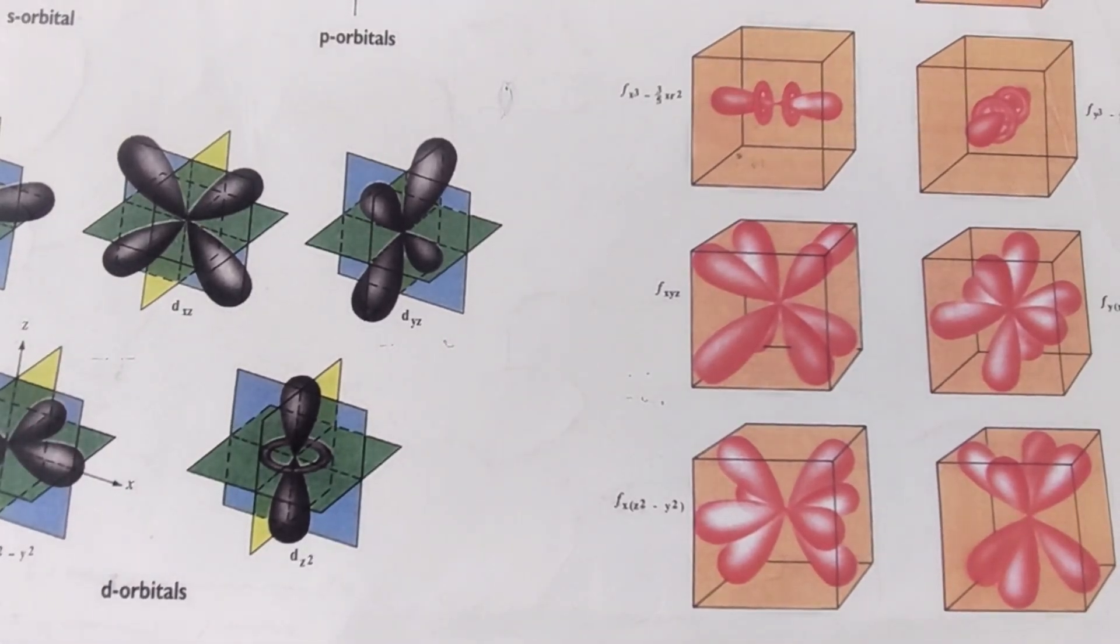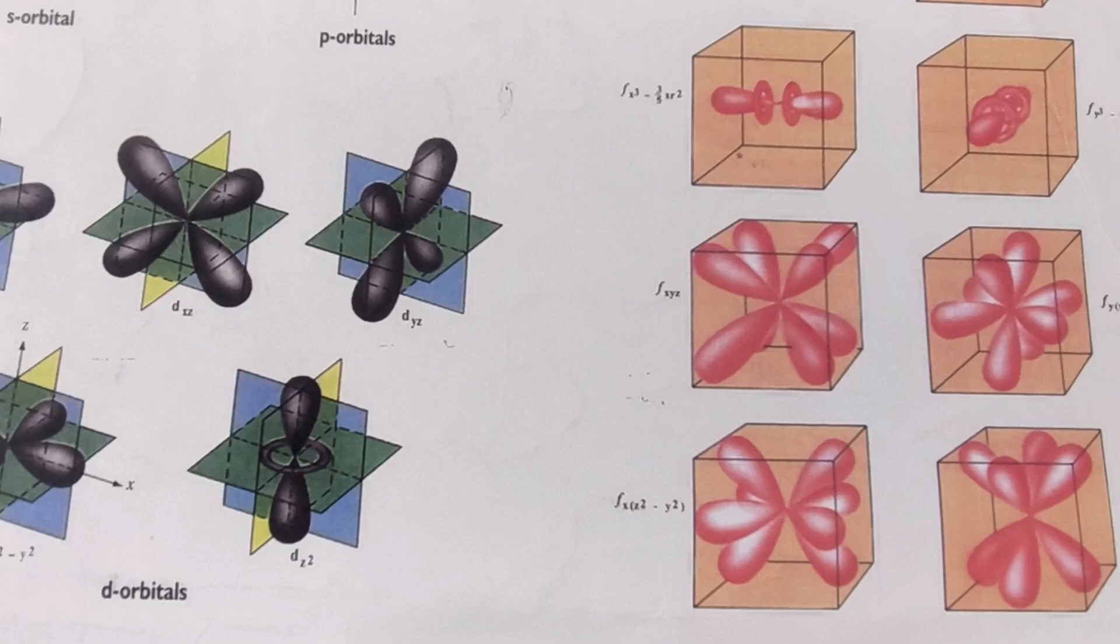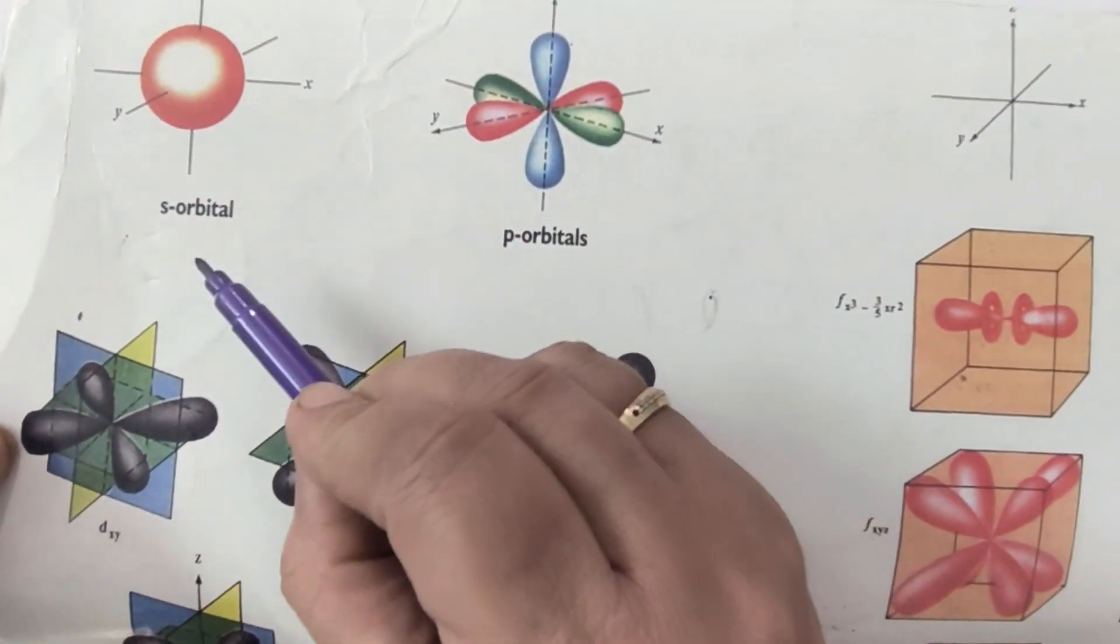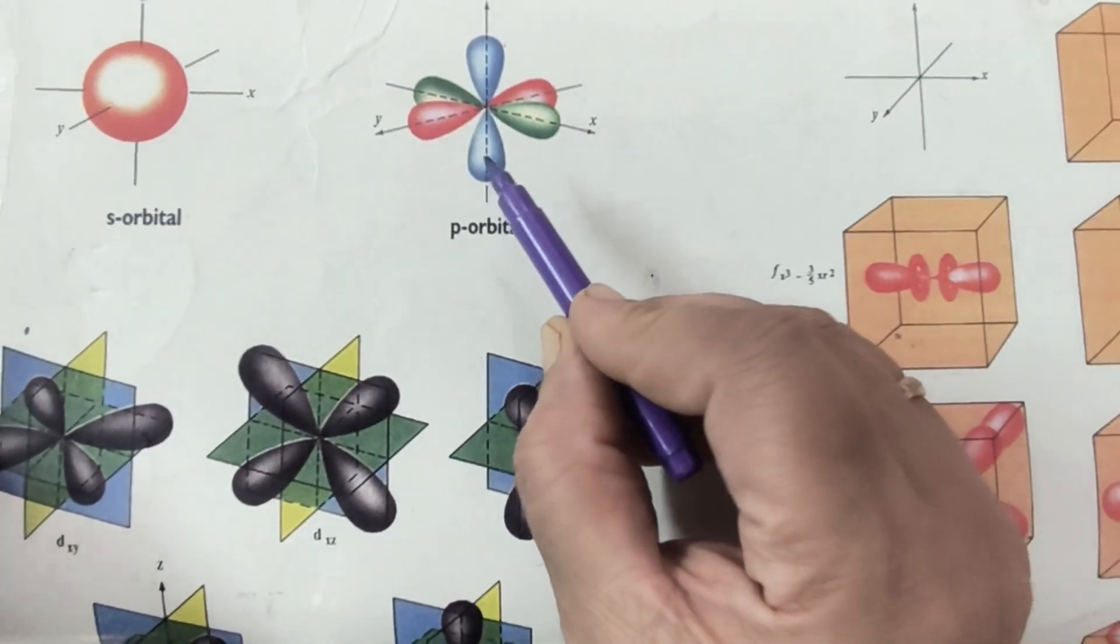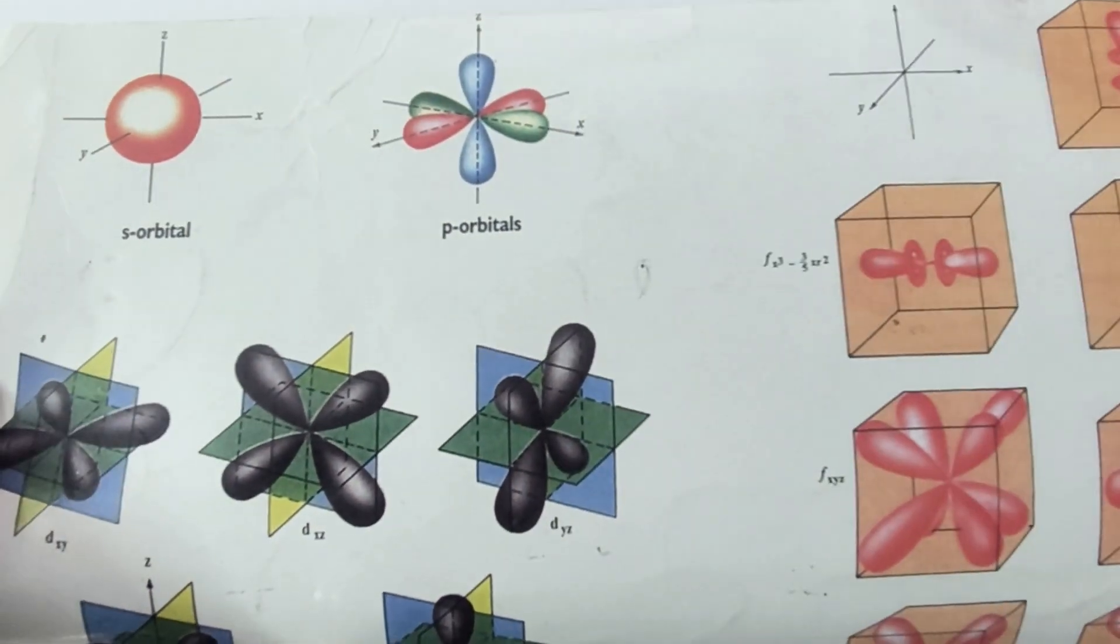So what are the shapes of the orbital in your 11th class, 12th class? We are studying the shape of s orbital is spherical. The shape of s orbital is spherical.